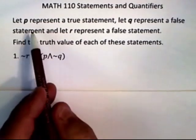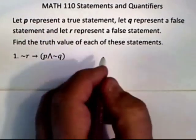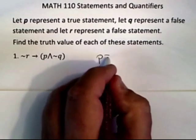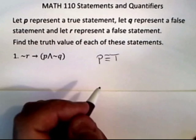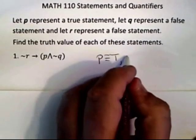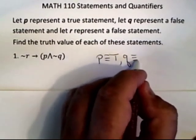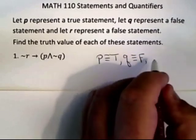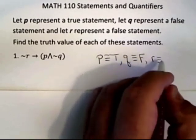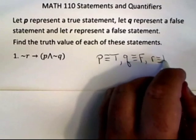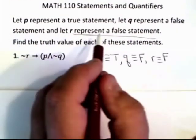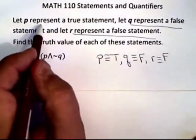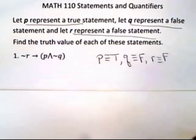First of all they're telling me that p is going to be true, so I'm actually going to write that down. P is equivalent to a true statement, q is equivalent to a false statement, and r is equivalent to a false statement. So I'm getting that information from above here.